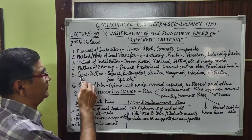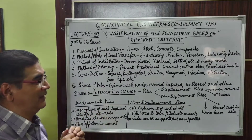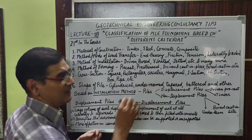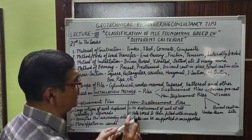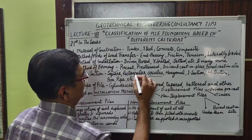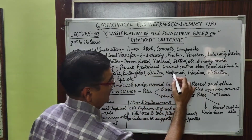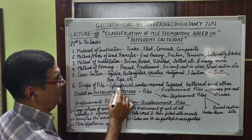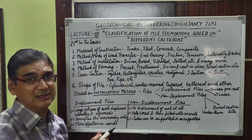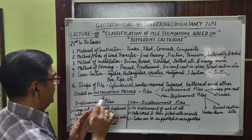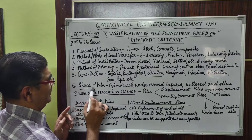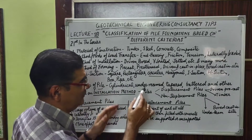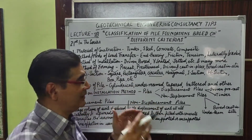The fifth criterion is the cross-section of the pile. Generally we believe the pile is circular, but in some cases it can be square, rectangular, or hexagonal in shape. When terms like I-section, X-section, box, or pipe are used, these refer to steel piles. Depending upon the shape you can define the pile as cylindrical or circular.